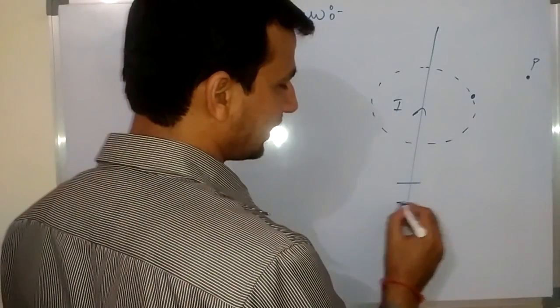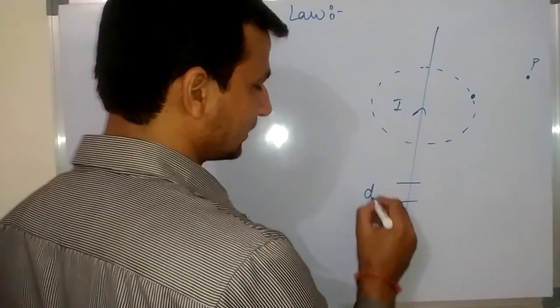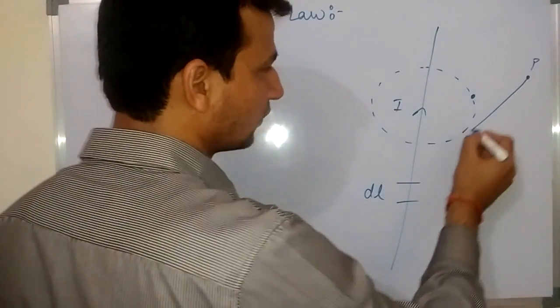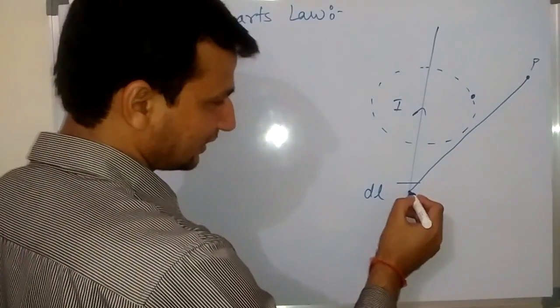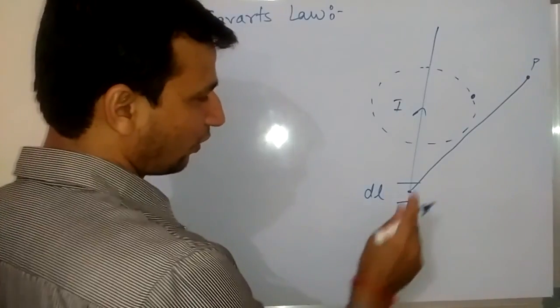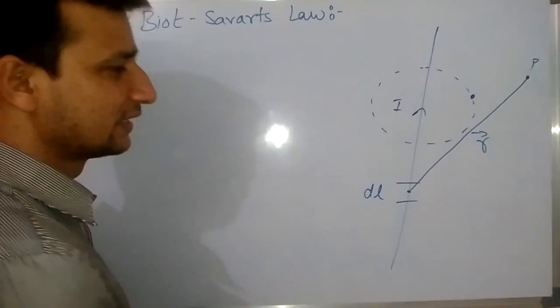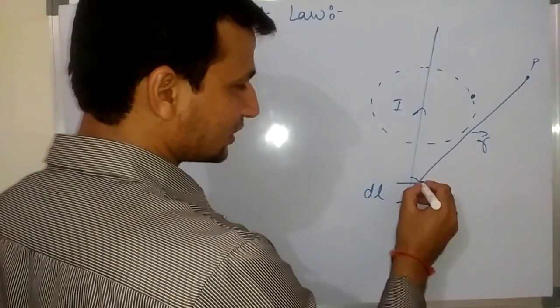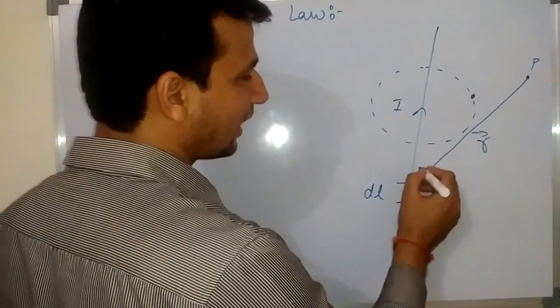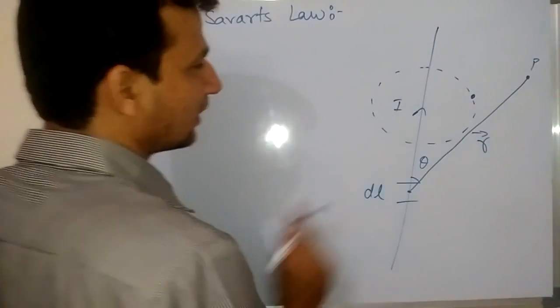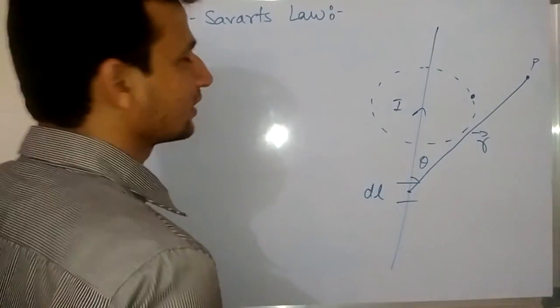Let's say a very small element of this conductor, that is DL. The distance of point P from this conductor element of length DL is R. The angle between this small element DL and R is theta. We already know current I is flowing in this wire.